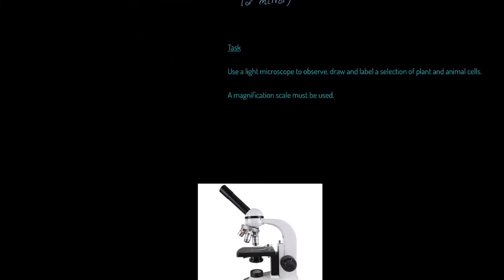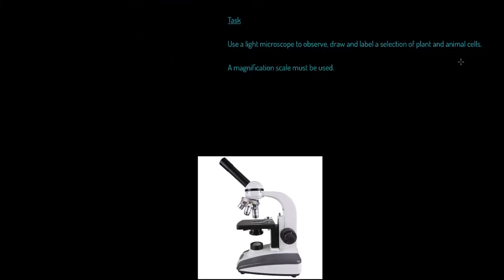I want to immediately introduce you to the task. It's one that might seem kind of simple, but I really want you to focus your detail and attention on. You are going to use a light microscope to observe, draw, and label a selection of plant and animal cells. And you are going to learn how to use a magnification scale to do that as accurately as possible.